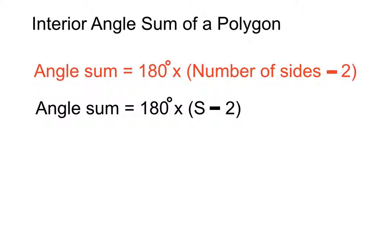So, angle sum is 180 times s, which stands for the number of sides in the polygon, minus two in brackets there. Let's see how that works.